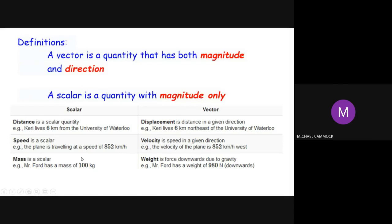Mass is a scalar. Mr. Ford — and this is no reference to the premier of the province — has a mass of 100 kilograms; that's a scalar because it has no indication of what that mass is doing. Relate that to weight: Mr. Ford has a weight of 980 newtons downwards. There's a force pushing in a particular direction, which makes weight a vector, whereas mass is just a scalar.